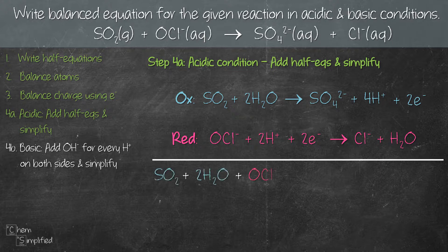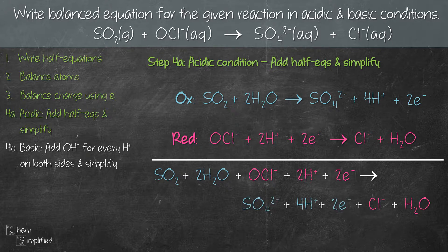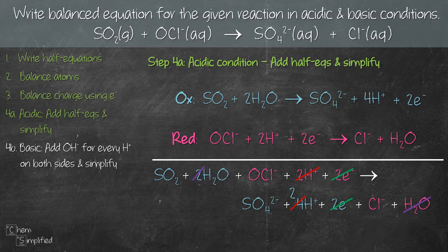From oxidation we have SO₂ + 2H₂O; from reduction we have OCl⁻ + 2H⁺ + 2e⁻. On the right hand side we have SO₄²⁻ + 4H⁺ + 2e⁻ + Cl⁻ + H₂O. Before we call it done, let's simplify. We have H₂O on both sides, so we cancel it out, leaving 1H₂O on the left. We also have H⁺ on both sides, so cancelling gives 2H⁺ on the right. Same for the electrons — we have 2e⁻ on both sides, so we cancel them out.